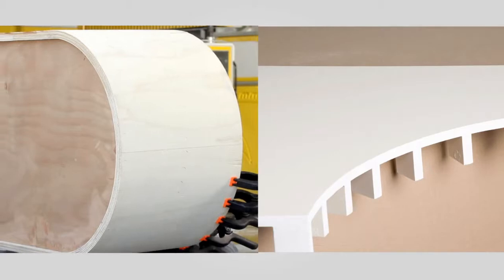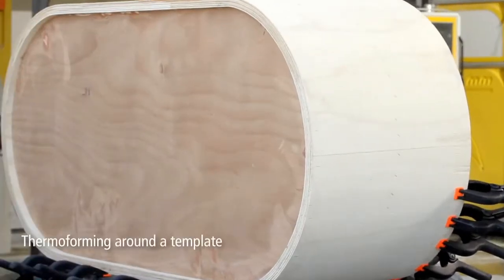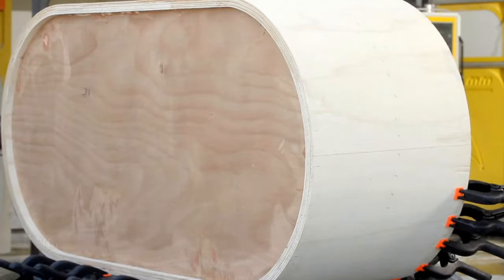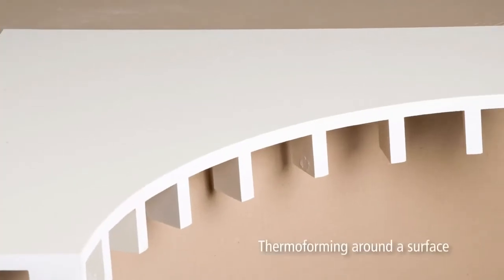One method is thermoforming around a template for which you will need to prepare a template in advance out of wood or another suitable material. The second method is thermoforming around a surface.